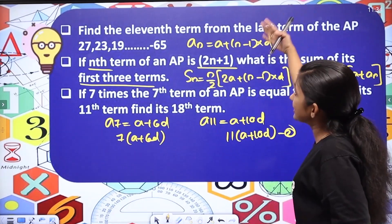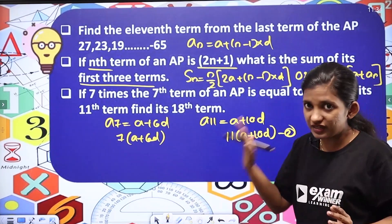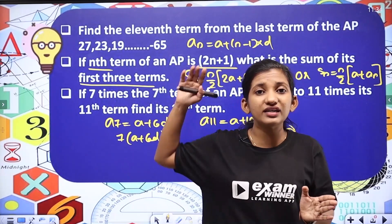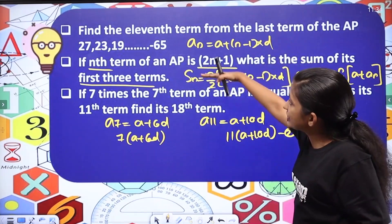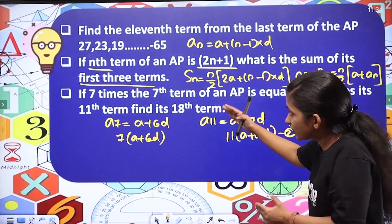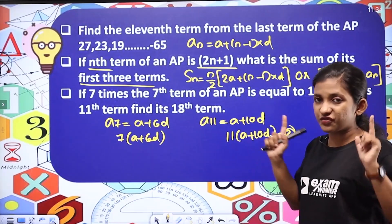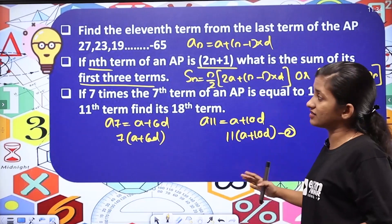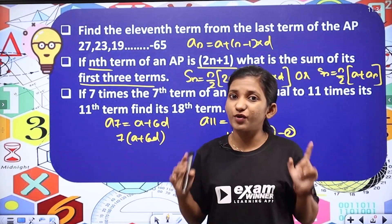The 18th term is equal to a plus 17d. So, how many questions are there? The type of questions are important for this chapter. The question covers more than one chapter topic.